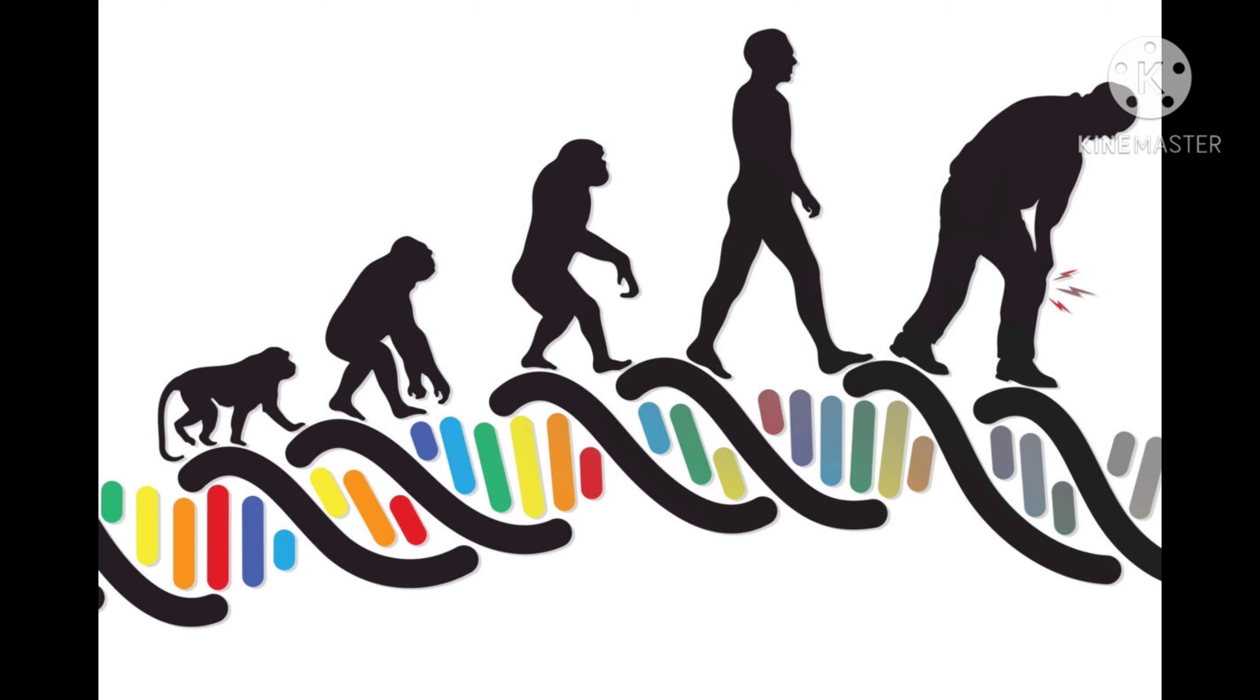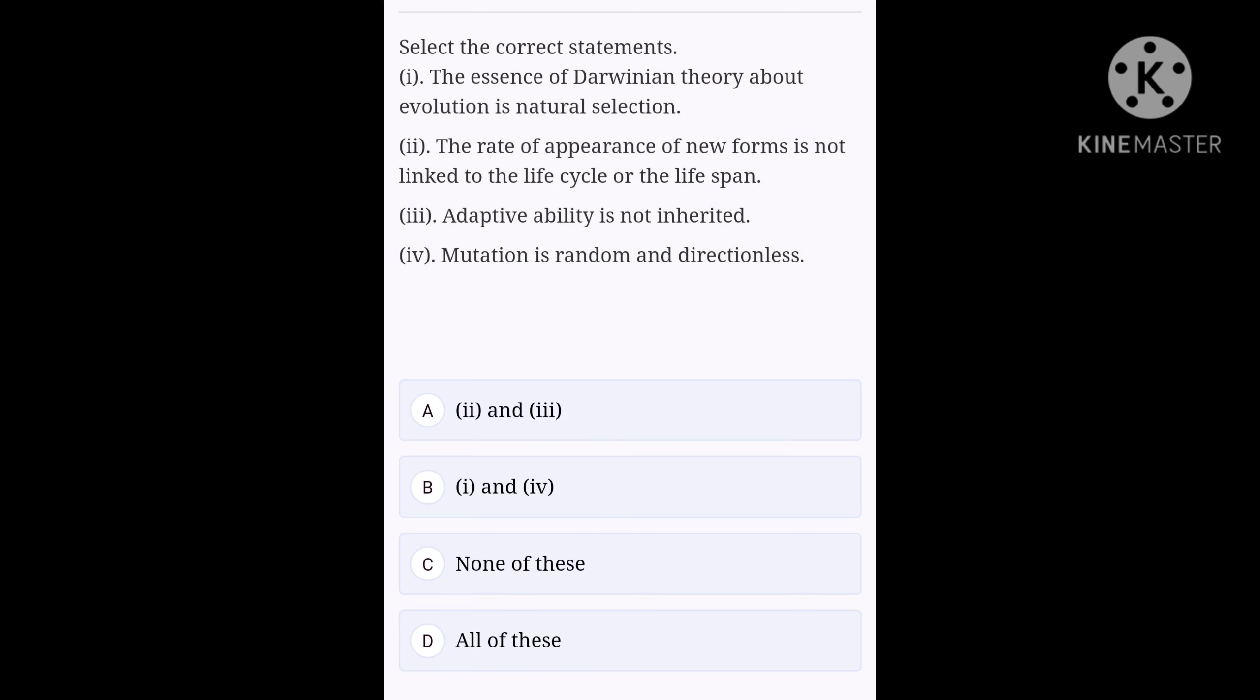Let's see our first question. Select the correct statements. Point number one: the essence of Darwinian theory about evolution is natural selection. Point number two: the rate of appearance of new forms is not linked to the life cycle or the lifespan. Point number three: adaptive ability is not inherited. Point number four: mutation is random and directionless. The correct statements are one and four, which makes option B the right answer.